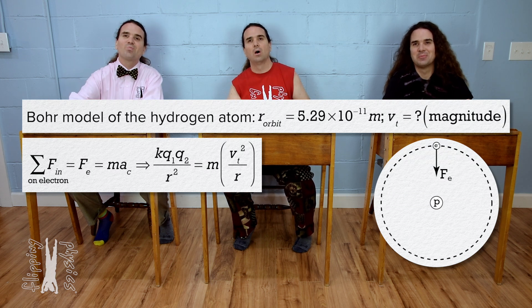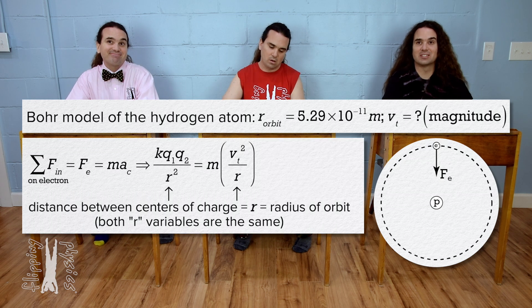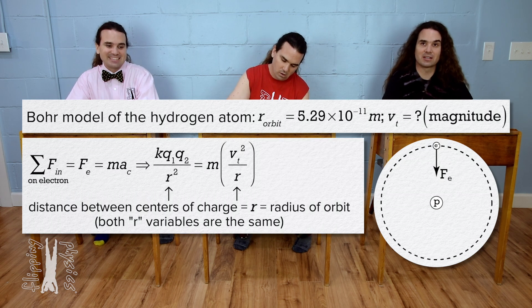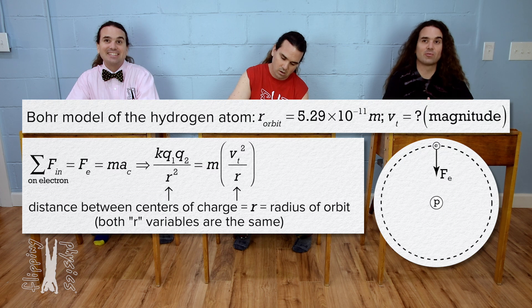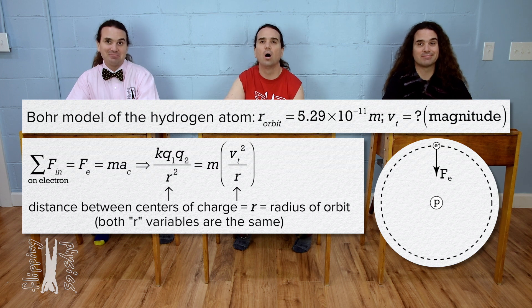Oh. In this instance, r, the distance between the centers of charge of the electron and the proton, is also the radius of the orbit of the electron. So, this is an example where r is also a radius. Nice.